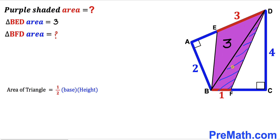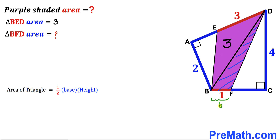Likewise, we are now going to focus on triangle BFD and calculate its area as well. Once again we use the area of a triangle formula: area equals one-half times base times height. For triangle BFD, segment BF is the base of this triangle, and side CD is the height.